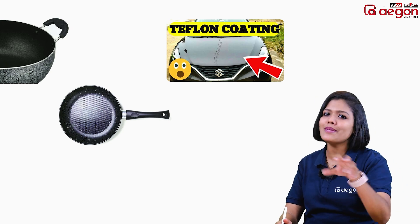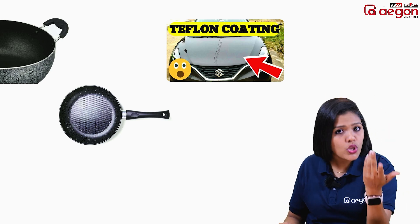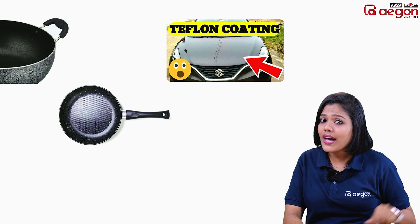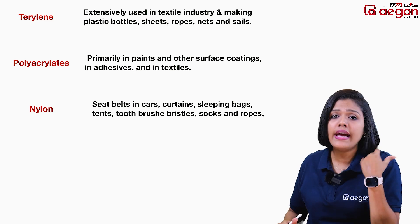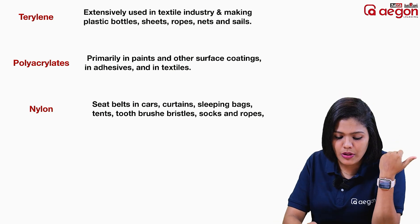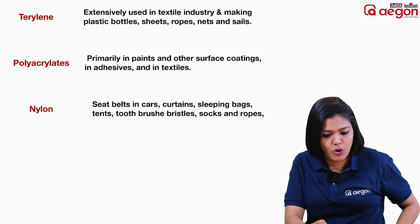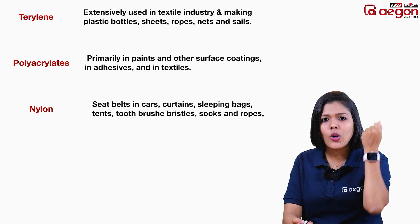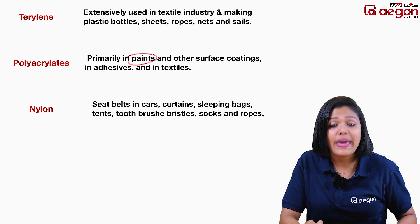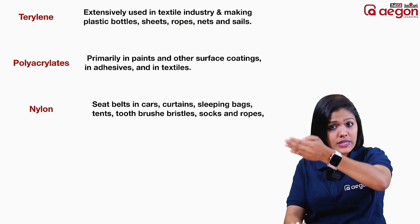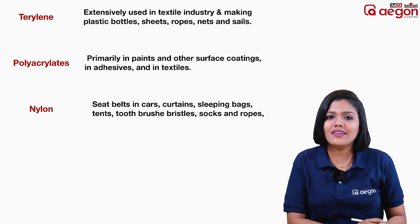Teflon coating is also used in automobiles and shining surfaces. The other options include: terylene, used in textile industries and dress materials, and in plastic bottles, sheets, ropes. Polyacrylides are used in paints and surface coating, and also in neutlating and textile materials.